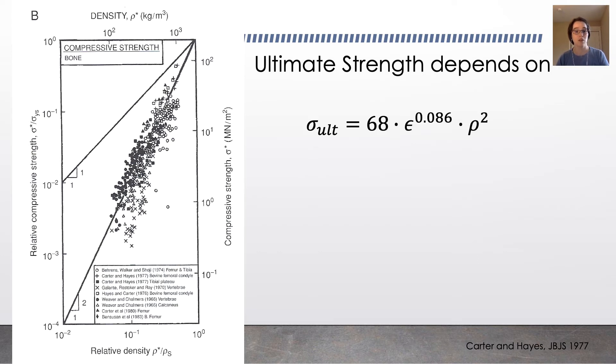So you can characterize this mathematically. The ultimate strength is equal to a constant, 68, times the strain rate to the power 0.086, times the density squared. So ultimate strength depends on the apparent density. And the squared relationship means that bone mineral loss has significant effects on the strength of the bone.